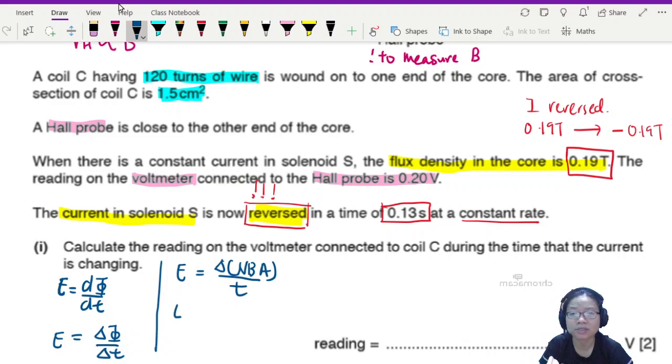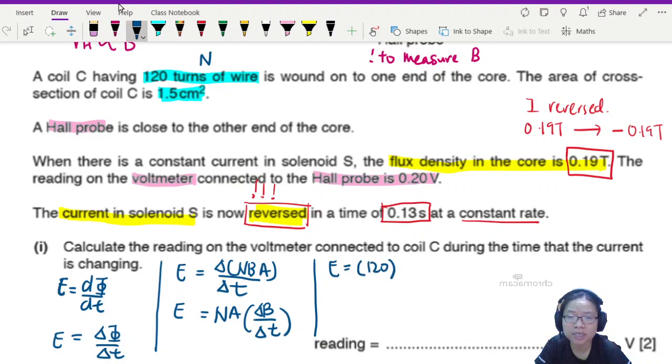So the induced EMF here would be equal to the change in flux over the time taken for it to change. What is the change in flux? The change in NBA over T. Let's pluck out our constants. Number of turns in coil C, N is constant. Area is constant. What you have left is just delta B changing magnetic flux density over delta T, time taken for this to change.